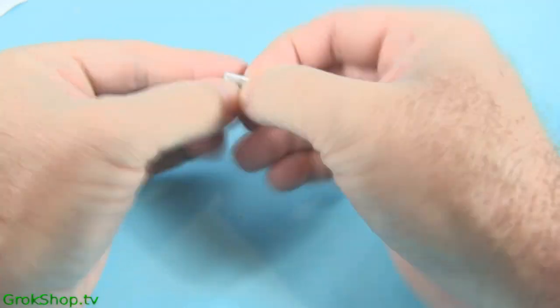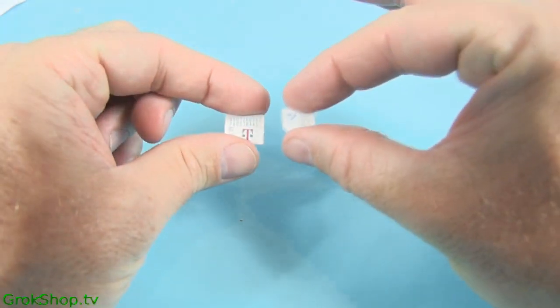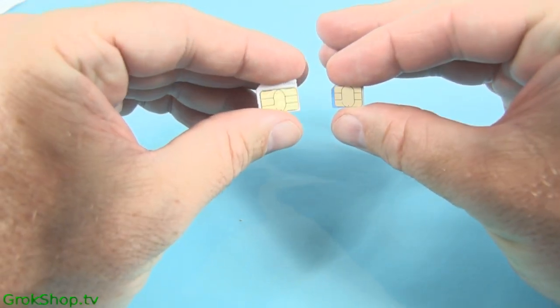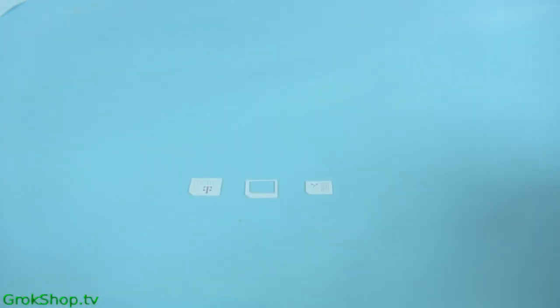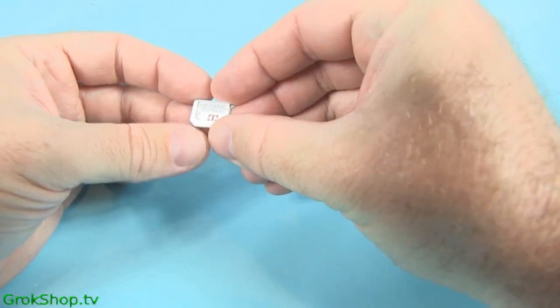Now just to illustrate the size difference, I have one of these SIM cards where you can punch out the nano portion from the micro portion, and you can see the size difference here between the two.